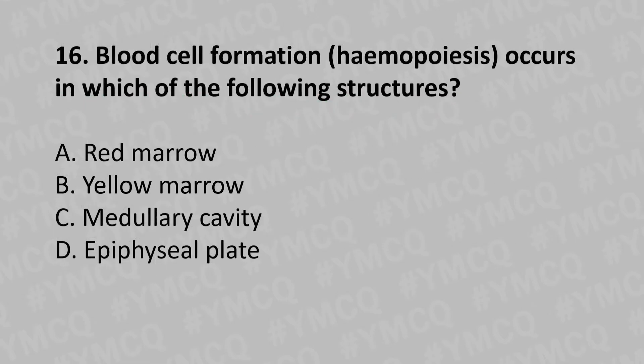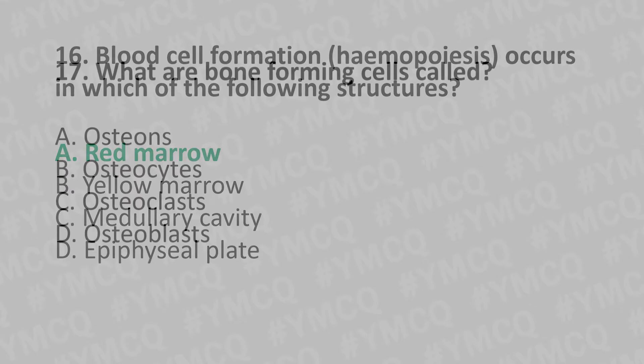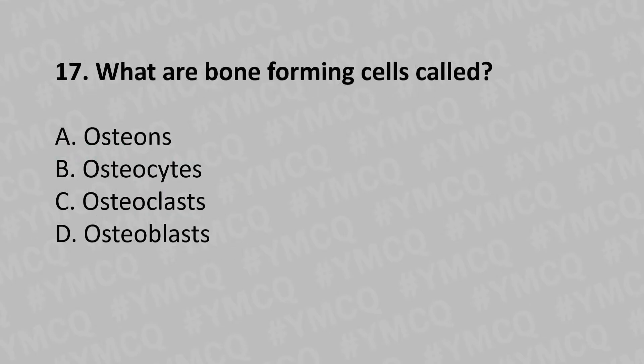Moving to our 16th question: Blood cell formation — hemopoiesis — occurs in which of the following structures? Option A: red marrow, Option B: yellow marrow, Option C: medullary cavity, Option D: epiphyseal plate. The answer is Option A: red marrow.